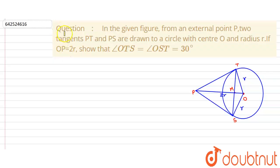Hello everyone, let's start this question. This question says that in the given figure, from an external point P, two tangents PT and PS are drawn to a circle with center O and radius r. If OP is given to be 2r, we need to show that angle OTS equals angle OST equals 30 degrees.